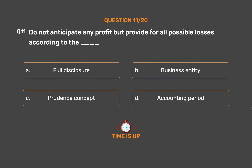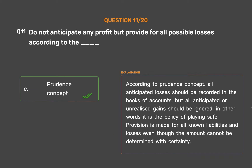The correct answer is Option C: Prudence Concept. According to the Prudence Concept, all anticipated losses should be recorded in the books of accounts, but all anticipated or unrealized gains should be ignored. In other words, it is the policy of playing safe. Provision is made for all known liabilities and losses even though the amount cannot be determined with certainty.